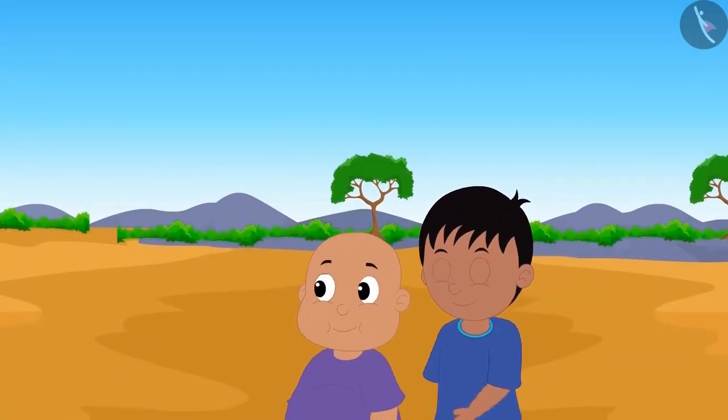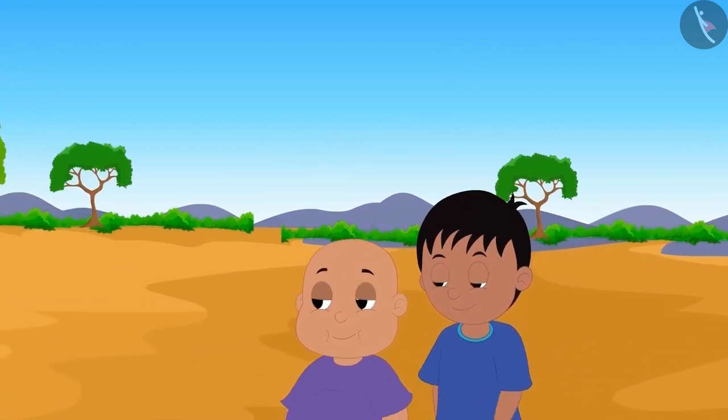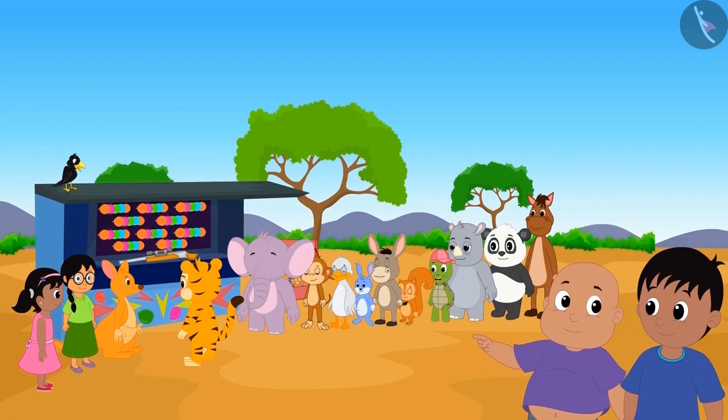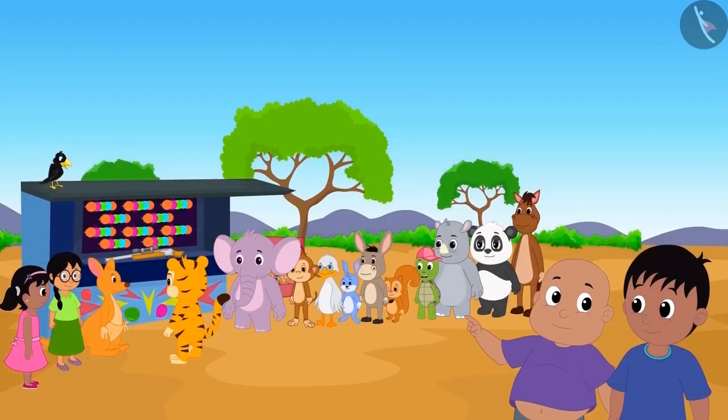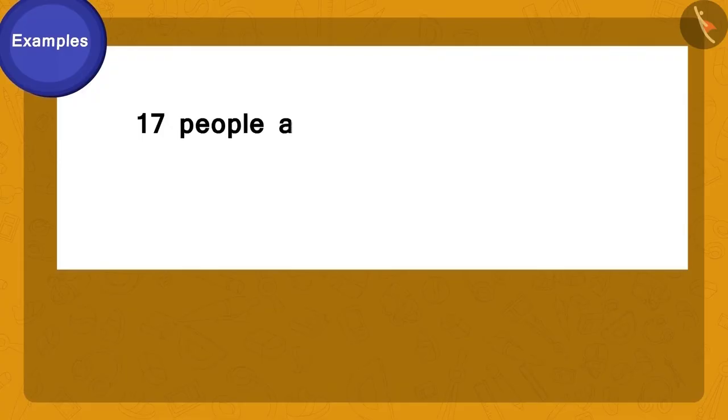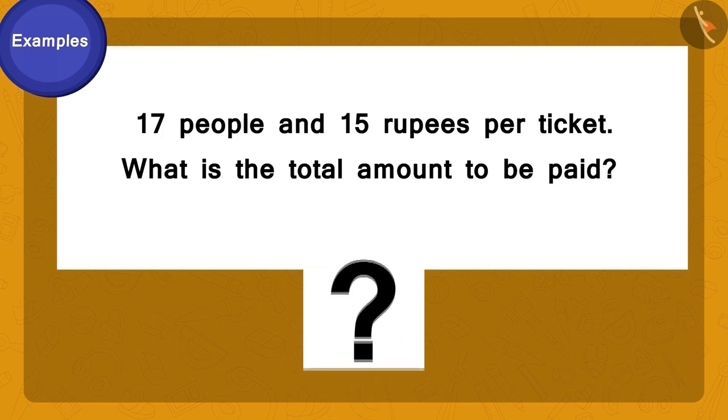While going around the fair, Raju and Bablu stopped at the game stall, which had the balloon-busting game. Bablu asked Raju, why not buy tickets to this game for themselves and their friends? Bablu and Raju counted the number of people. Including both of them, there are seventeen people. The cost of one ticket for the balloon bus game is rupees fifteen. Raju and Bablu are unable to calculate how much money they will have to pay to buy the required number of tickets.